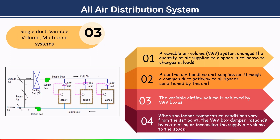The temperature of supply air to each zone remains constant, whereas the flow rate varies depending upon the load on that particular zone — that is why this system is called a variable volume system. The temperature of air supplied by the AHU may be varied occasionally for building-wide load changes, but instant control of each zone is achieved through modulation of supply air flow rate via VAV box dampers.